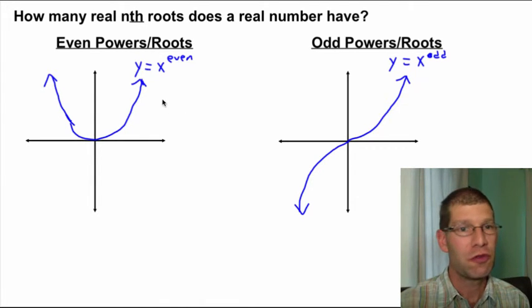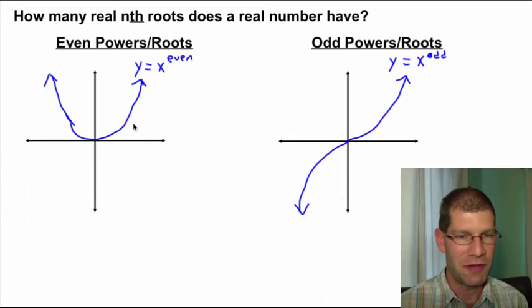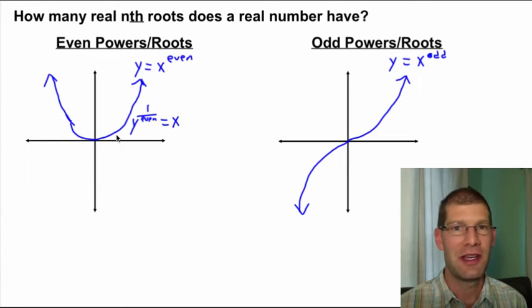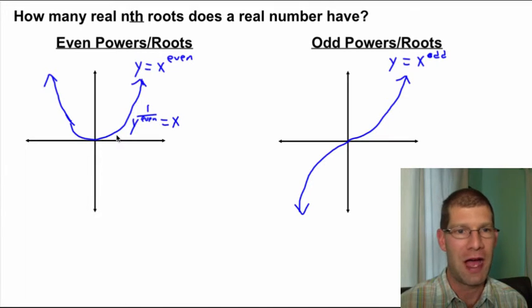Now, if we wanted to look at these as roots, you could then say that same blue equation would be if we had something like y to the 1 over an even. So, my x is going to be 1 half, 1 fourth, 1 sixth equals x. So, my x value, my value of my x-axis is going to be whatever root of the y value that we're picking. Or, over here, we could say y to the 1 over an odd power is going to equal my x.